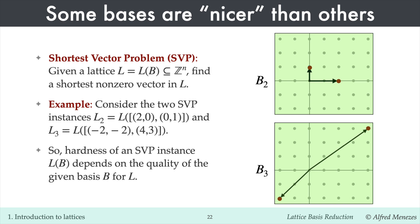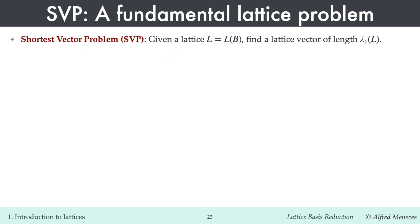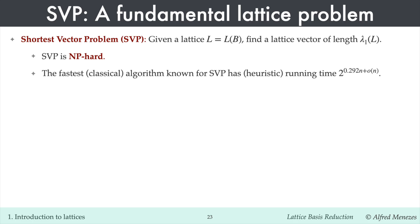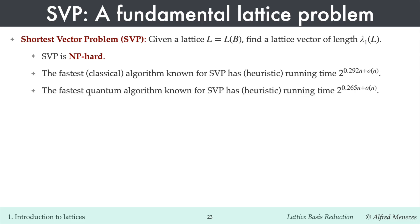The key point is that having a good basis for a lattice can make certain lattice problems easier to solve. The shortest vector problem, SVP, is a fundamental lattice problem and is believed to be very hard. Indeed, it has been proven to be NP-hard, which provides strong evidence of its difficulty, at least in the worst case. The fastest algorithm known for SVP runs in time 2^(0.292n), which is exponential in the lattice dimension n. The fastest quantum algorithm known for SVP runs in time 2^(0.265n), also exponential in n. The NP-hardness of SVP, along with its apparent resistance to quantum attacks, makes it a useful foundation for designing quantum-safe cryptosystems.